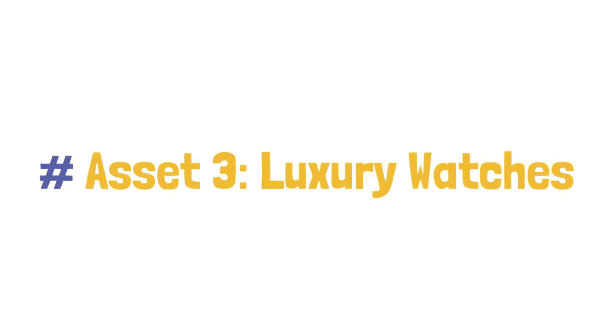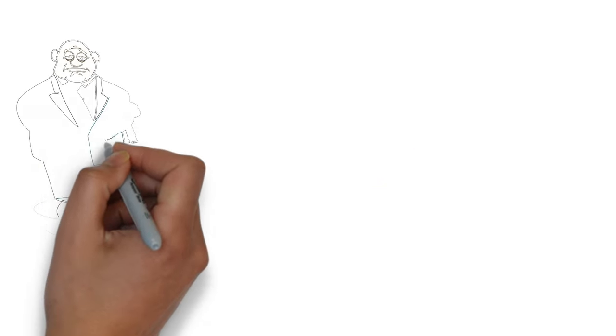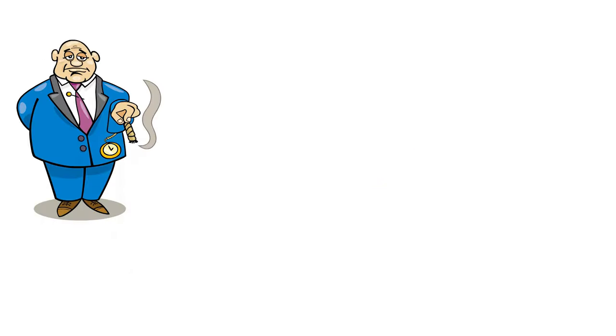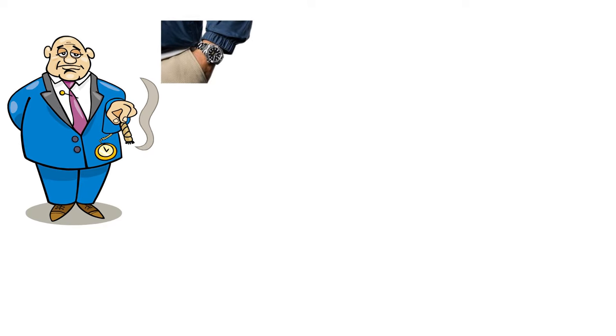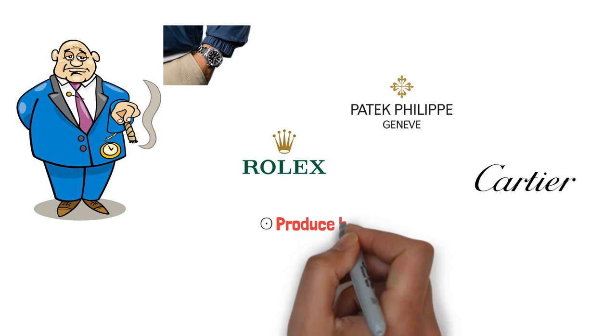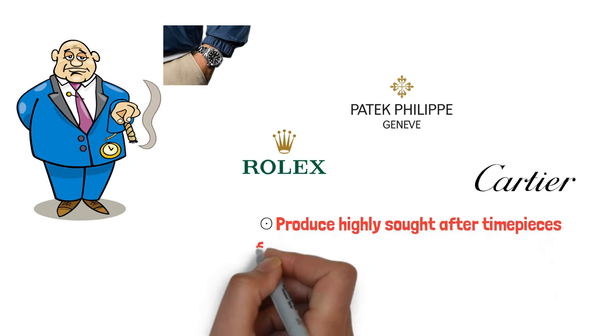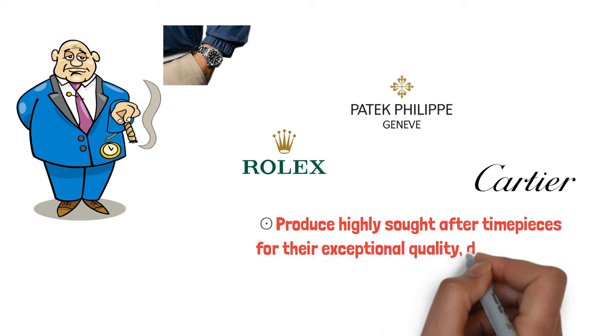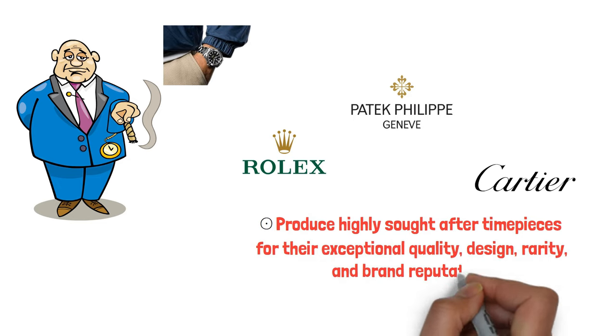Asset 3: Luxury Watches. A symbol of prestige and craftsmanship, luxury watches are an intriguing investment form. Brands like Rolex, Patek Philippe, and Cartier produce highly sought-after timepieces for their exceptional quality, design, rarity, and brand reputation.